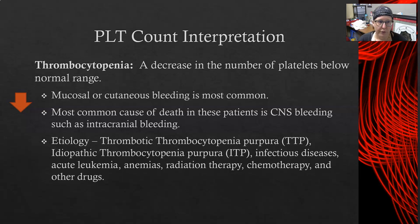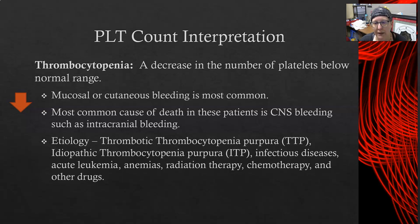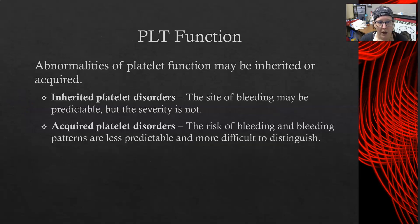The causes of thrombocytopenia include thrombotic thrombocytopenic purpura (TTP), idiopathic thrombocytopenic purpura (ITP), infectious diseases, acute leukemias, anemias, radiation therapy, chemotherapy, and other drugs.